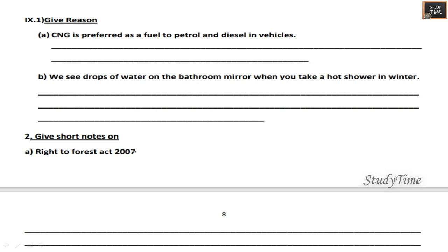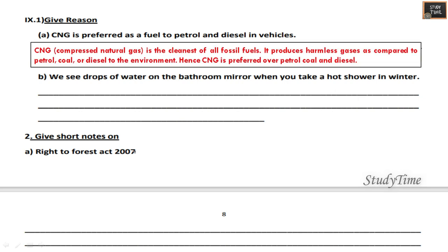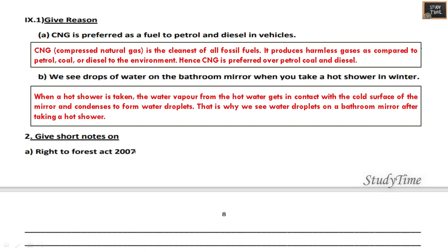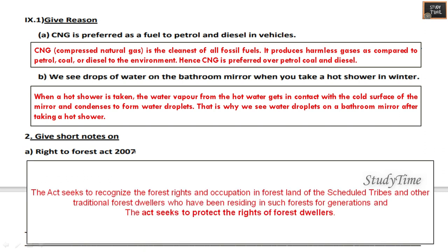Give reason: CNG is preferred as a fuel over petrol and diesel in vehicles, because it produces less harmful gases compared to petrol, coal, or diesel. We see drops of water on the bathroom mirror when you take a hot shower in winter, because water vapor from the hot water comes in contact with the cool surface of the mirror and condenses to form water droplets. Give short notes on the Right to Forest Act 2007: the act seeks to recognize the forest rights and occupation of forest land of the Scheduled Tribes and other traditional forest dwellers who have been residing in such forests for generations, and seeks to protect the rights of forest dwellers.